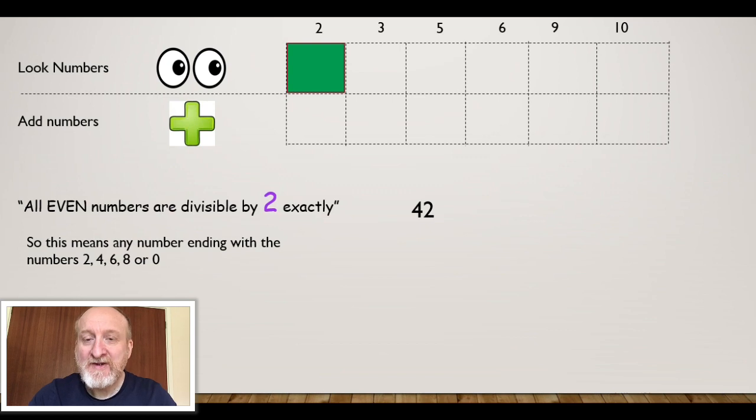So examples would be 42. It ends in 2, therefore it's even, therefore it's divisible by 2. 2,346 ends in 6, that means it's even, that means it's divisible by 2.